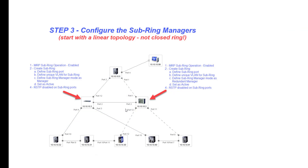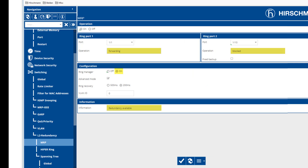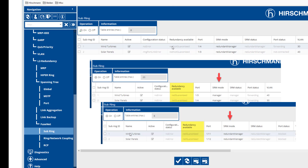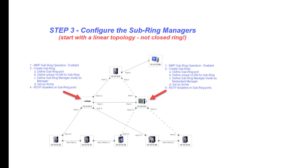With that, you're then able to connect your individual connections, and you should have an indication within the MRP that you have redundancy guaranteed. Within your subrings, you should also have redundancy guaranteed as well. This will give you the assurance that you have the necessary redundancy in the core ring as well as your two subrings. I hope that this has helped you with your configuration needs. Please feel free to reach out if we can be of additional assistance. Thanks for watching, and have a great day.